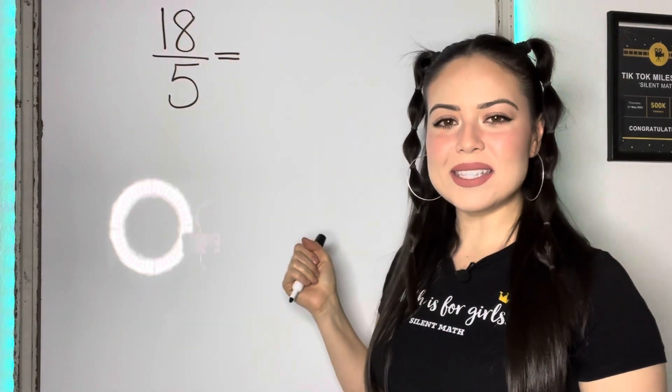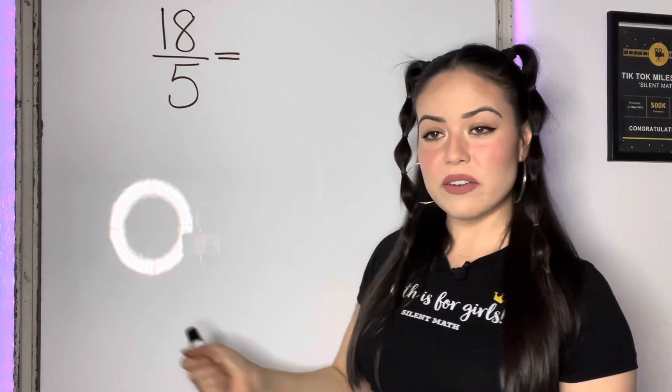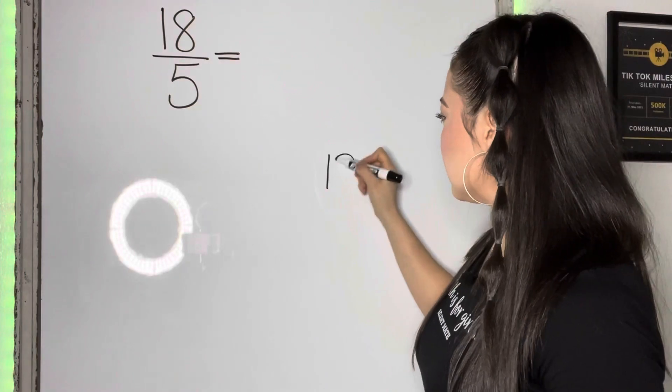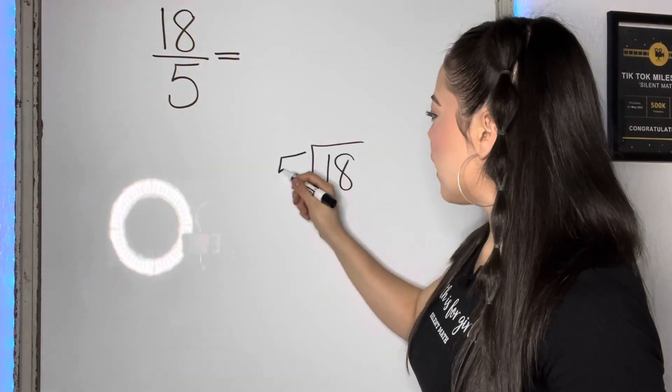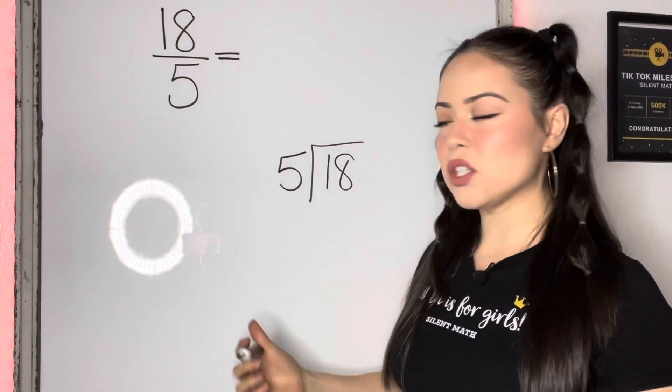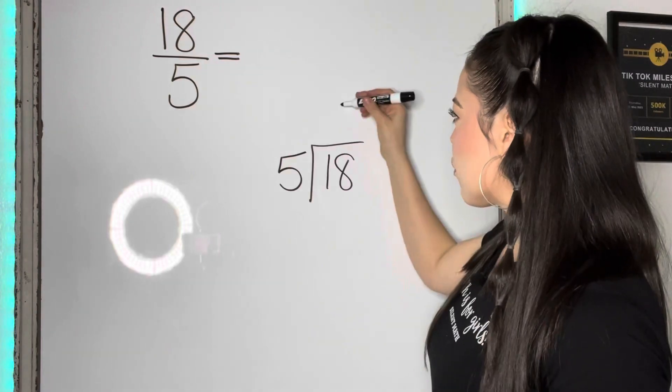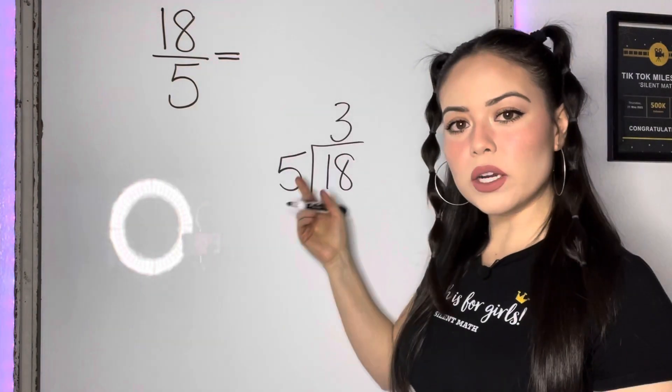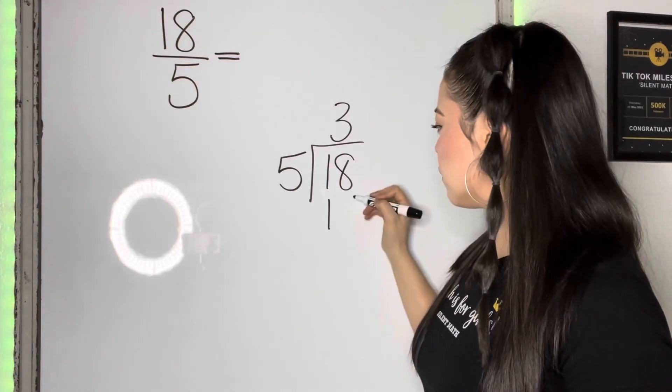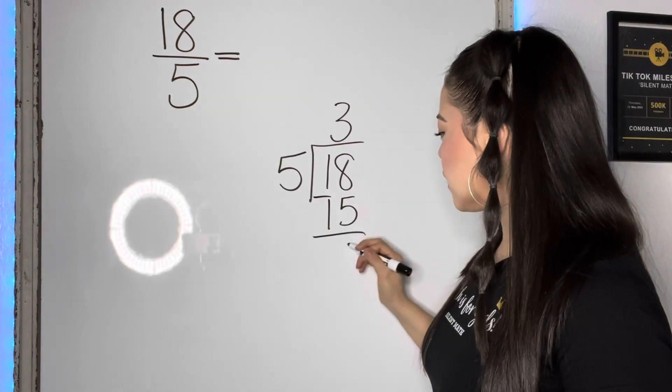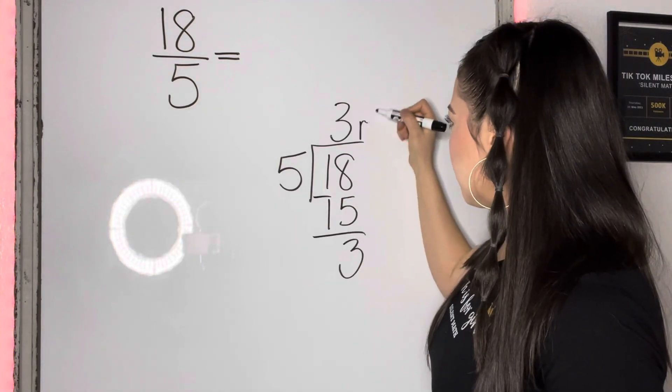Let's turn 18 fifths into a mixed number. We're gonna divide. So we're gonna do 18 divided by five, and you're gonna ask yourself the same question. Five goes into 18 three times without going over. Three times five is 15. We're going to subtract to find the remainder. We'll have a remainder of three.